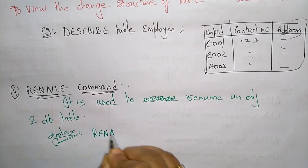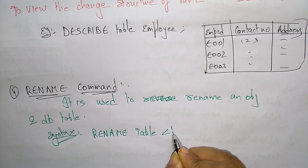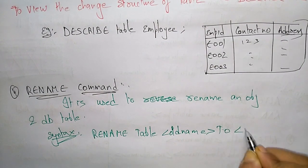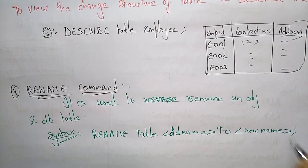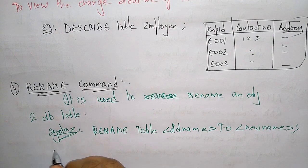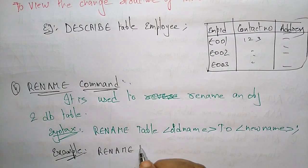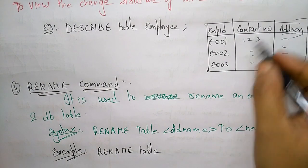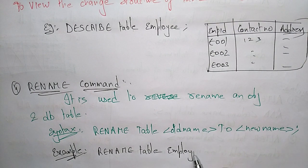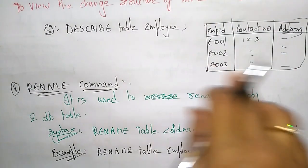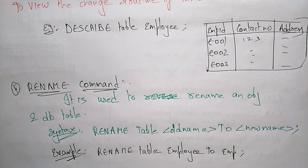Example: RENAME TABLE employee TO emp. The old name is 'employee'; the new name is 'emp'. Instead of employee, I change the name of the table to emp. So now this table's relation name is emp. This is the use of the RENAME command.